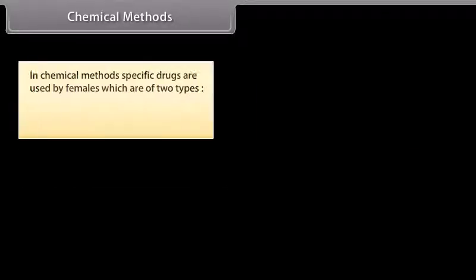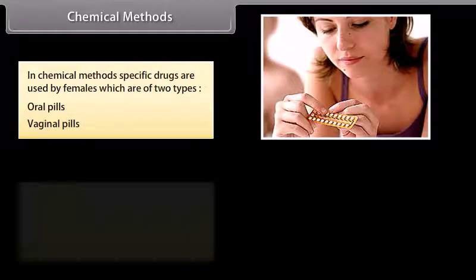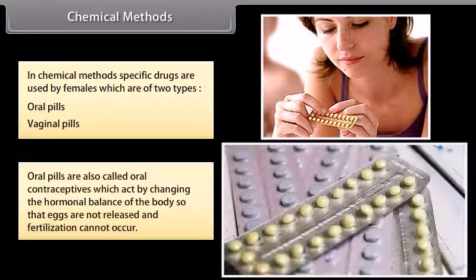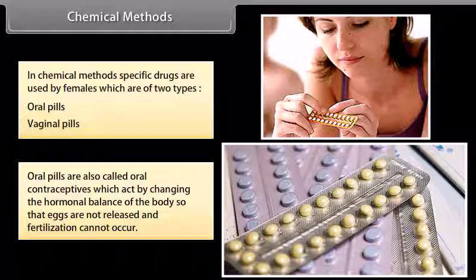Chemical methods: Specific drugs are used by females, which are of two types: oral pills and vaginal pills. Oral pills are also called oral contraceptives, which act by changing the hormonal balance of the body so that eggs are not released and fertilization cannot occur.